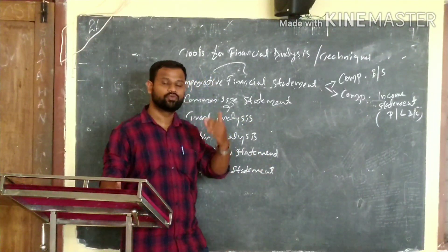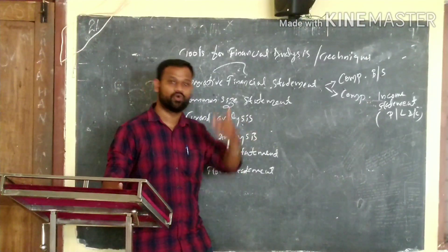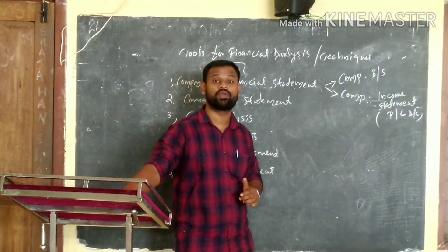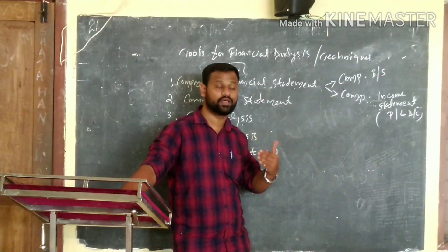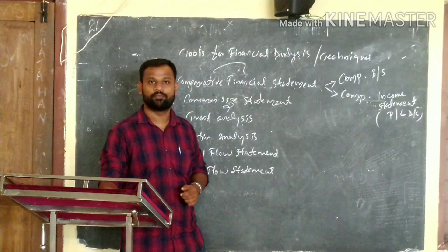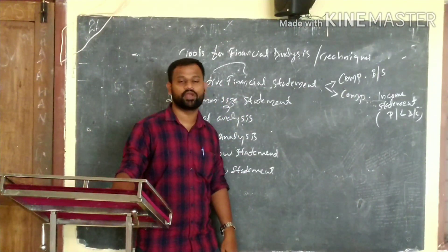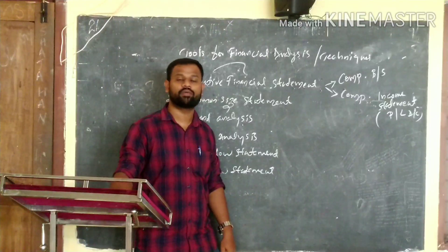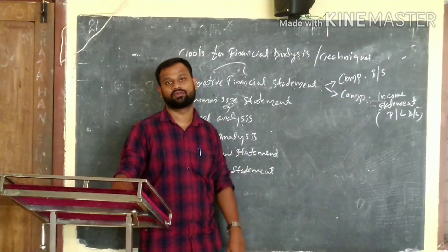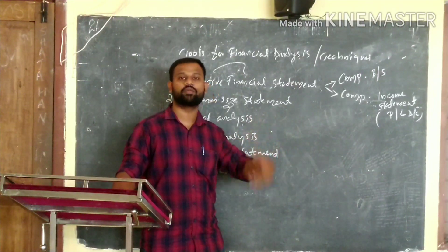For example, total assets is 1.5 million, building is 1.5 million, machinery is 1.5 million, and total assets is 1.5 million.